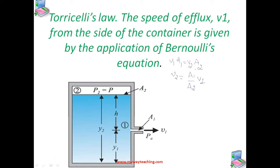If the cross-sectional area of the tank a2 is much larger than that of the hole a1, then we may take the fluid to be approximately at rest at the top portion. So we can say v2 equals zero.